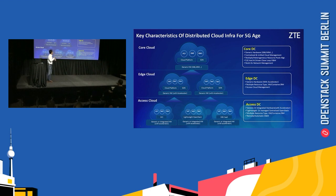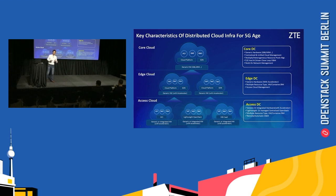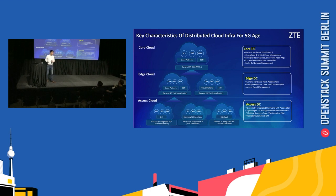For each data center at the core site, you have generic hardware — X86 platform, ARM platform, etc. — plus a centralized management system with multiple resource management capabilities: cross-vendor, cross-private cloud, public cloud. AI-based O&M tools are also included. At the edge, in addition to generic hardware, you may have accelerators such as GPU, FPGA, and SmartNIC to provide better performance.